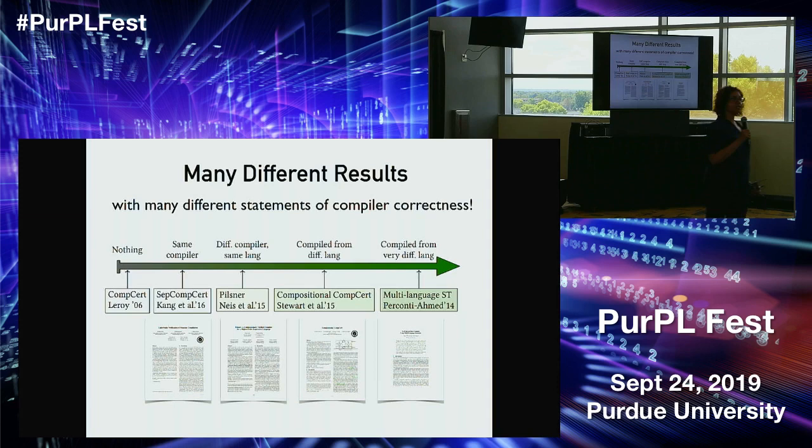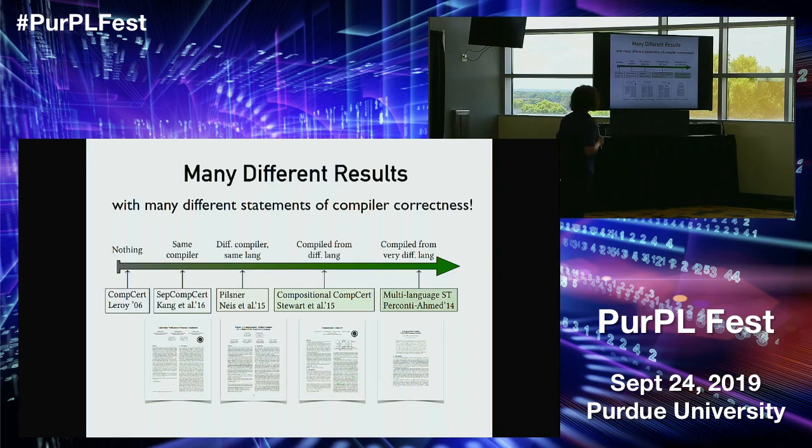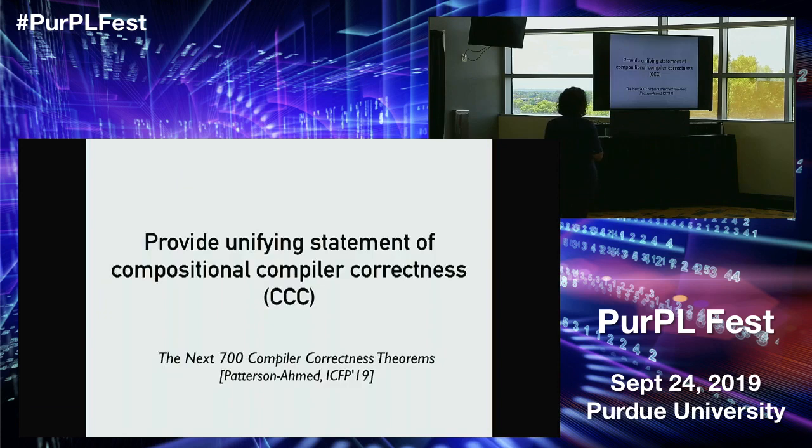What's surprising about all these results is that they each formalize compiler correctness in a very different way. It shows that when doing correct compilation of components there are a variety of possibilities. I'd like to spend the next several minutes talking about these results and how to make sense of them.